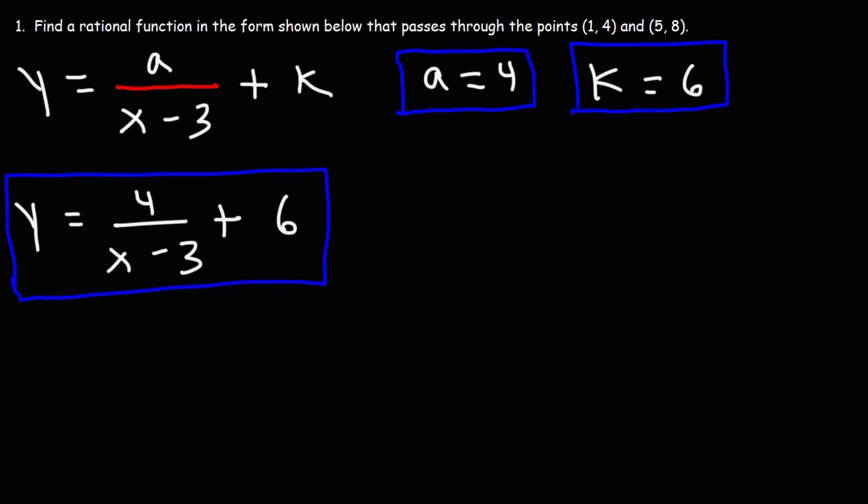This particular reciprocal function has a vertical asymptote at x equals 3 or x equals h, h is 3. And it has a horizontal asymptote of y equals 6 since k is 6. Now, since the absolute value of a is greater than 1, we know that this graph is going to stretch by a factor of 4.